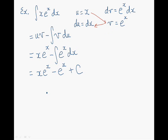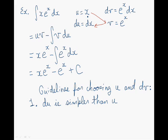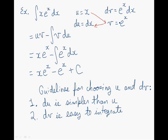There are guidelines for choosing these functions. The first guideline is that du is simpler than u. If we look at our example, the derivative of x is 1, which is simpler than x. The second guideline is that dv is easy to integrate. In our previous example, dv is e to the x dx, and finding the integral of e to the x is quite simple — it's e to the x. Keep in mind these are only guidelines, and there are exceptions you'll find when working on examples. This concludes the presentation on integration by parts.